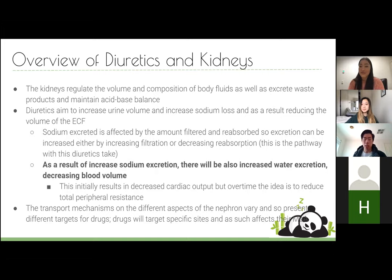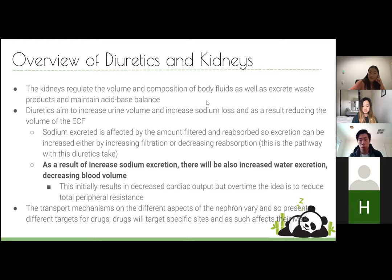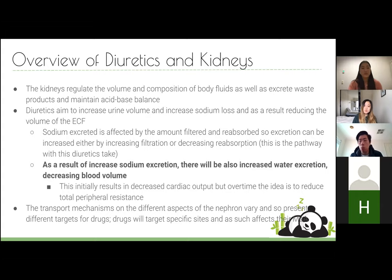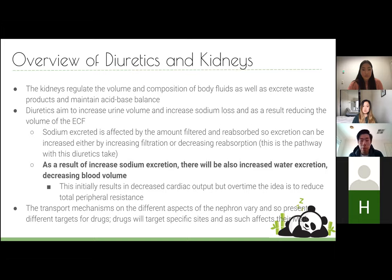Now moving on to diuretics. The kidneys regulate volume and composition of body fluids. Diuretics aim to increase urinary volume by increasing sodium loss — remember, water follows sodium wherever it goes. So all diuretics target sodium as the primary mechanism. Reducing sodium reduces ECF volume, which decreases blood volume and cardiac output initially, then ultimately reduces total peripheral resistance.